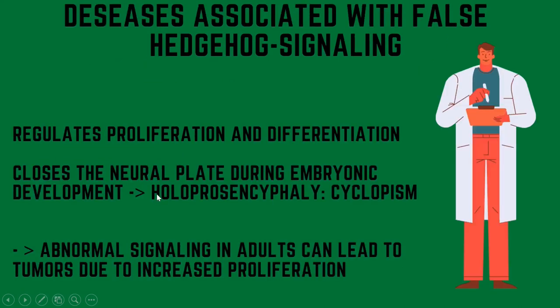There are different diseases associated with false hedgehog signaling. It regulates proliferation and differentiation, and it closes the neural plate during embryonic development, which can lead to a disease called holoprosencephaly, better known as cyclopia. Abnormal signaling in adults can lead to tumors due to increased proliferation.